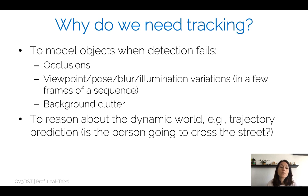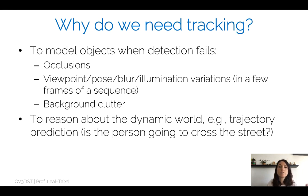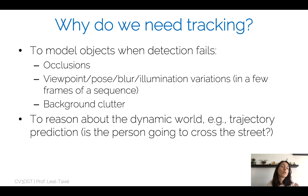The most important reason we need tracking is to reason about the dynamic world. When we detect a car or pedestrian, we're not just interested in knowing it's there — we want to predict a trajectory into the future. In autonomous driving, for example, we're interested in knowing whether a pedestrian is going to cross the street and enter the trajectory of the car. It's this aspect of modeling the dynamic world, not just the static one, that makes tracking really interesting.